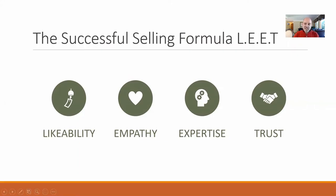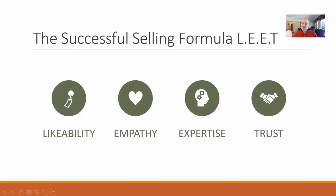Remember the acronym LEET: L is for Likability, E is for Empathy, E is for Expertise, and T is for Trust. If you can establish yourself as likable, display empathy, and show expertise, trust will begin to form. Once the prospective customer trusts you, they become much more likely to buy from you. You can sell lessons without these qualities, but establishing LEET puts you on a good start to a strong customer relationship.